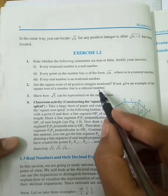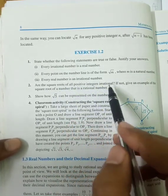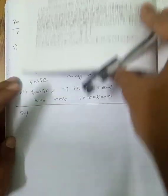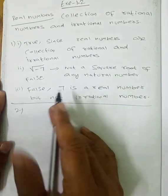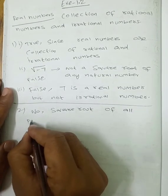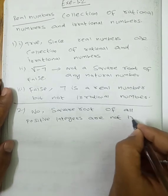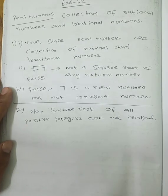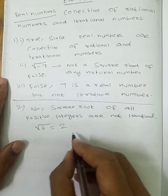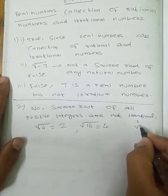Second question: Are the square roots of all positive integers irrational? If not, give an example of the square root of a number that is rational. Square roots of all positive integers are not necessarily irrational. For example, √4 and √16 are rational numbers.